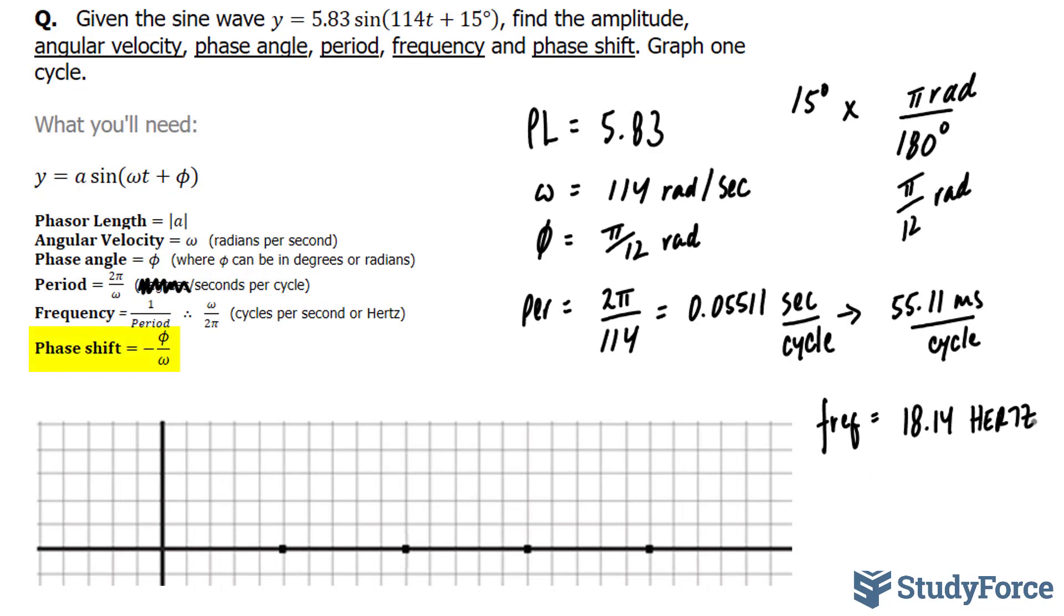And lastly, the phase shift is the negative phi over angular velocity. So whatever our phase shift was, and in our case it was pi over 12, we take the phase shift, which I'll represent as PS, is equal to negative pi over 12 divided by 114.